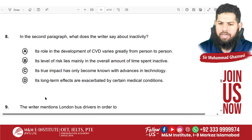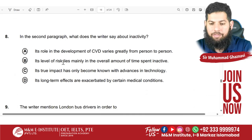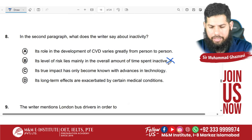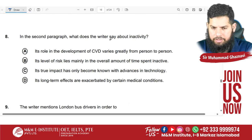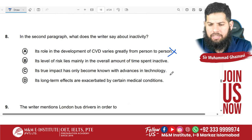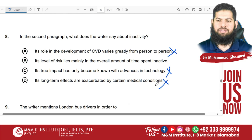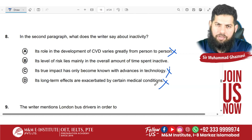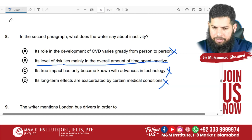Option A: 'The role of inactivity in development of CVD varies greatly from person to person' — I don't think they discussed that. Option B: 'Its level of risk lies mainly in the overall amount of time spent inactive' — that was discussed. Option C: 'Its true impact has only become known with advanced technology' — that was not there. Option D: 'Its long-term effects are exacerbated by certain medical conditions' — they have not made that relationship. So option B, 'its level of risk lies mainly in the overall amount of time spent inactive,' is the answer.